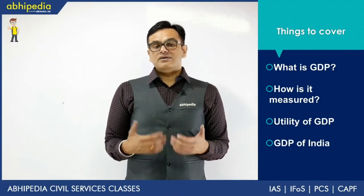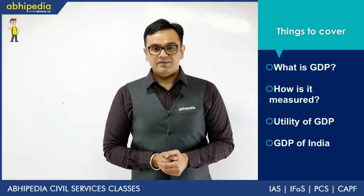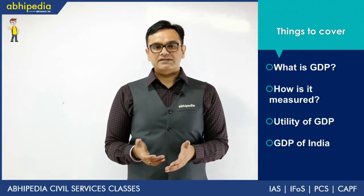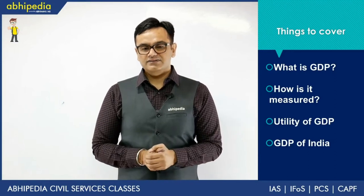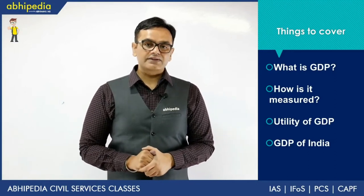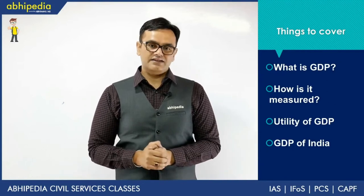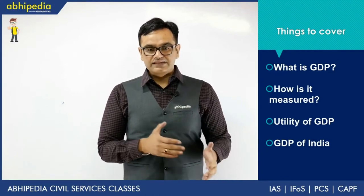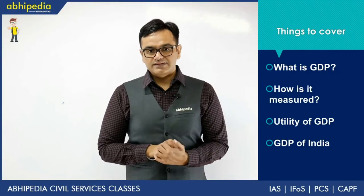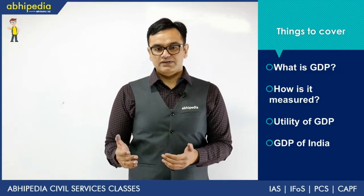As for how GDP is measured, we have an organization called NSO. Earlier we had a Central Statistical Organization, CSO, which was created in 1951 and was used to make national income estimates. But recently in 2019, the Ministry of Statistics and Programme Implementation merged CSO and NSSO — two departments — into a single organization called NSO.